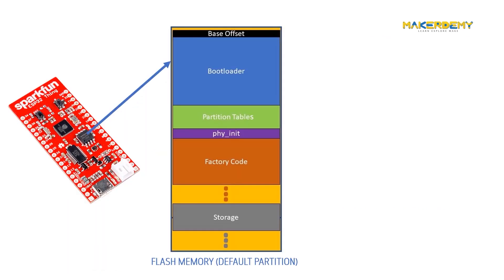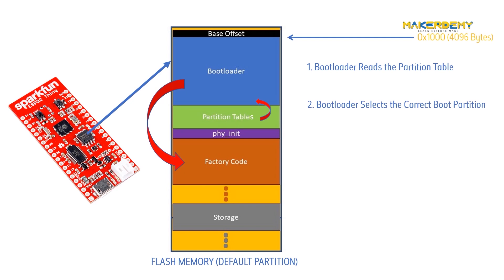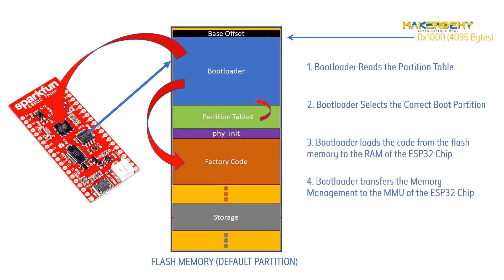When the ESP32 board is powered up, initially the control is given to a 4096-byte position in the flash memory called the bootloader. The responsibility of the bootloader is to select the correct partition to boot based on the partition table, then load this code to RAM of the ESP32 chip, and finally transfer the memory management to the memory management unit inside the ESP32 chip. This is how a new code is accessed from the flash memory and executed on the ESP32.